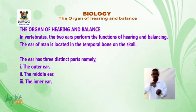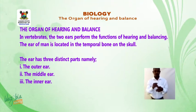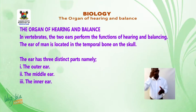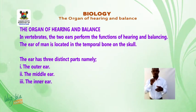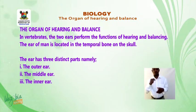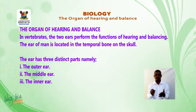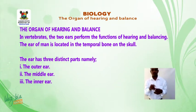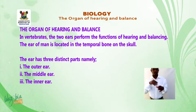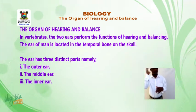The organ of hearing and balance. In vertebrates, the two ears perform the function of hearing and balancing. The ear of man is located in the temporal bone of the skull. The ear has three distinct parts: namely the outer ear, the middle ear, and the inner ear.